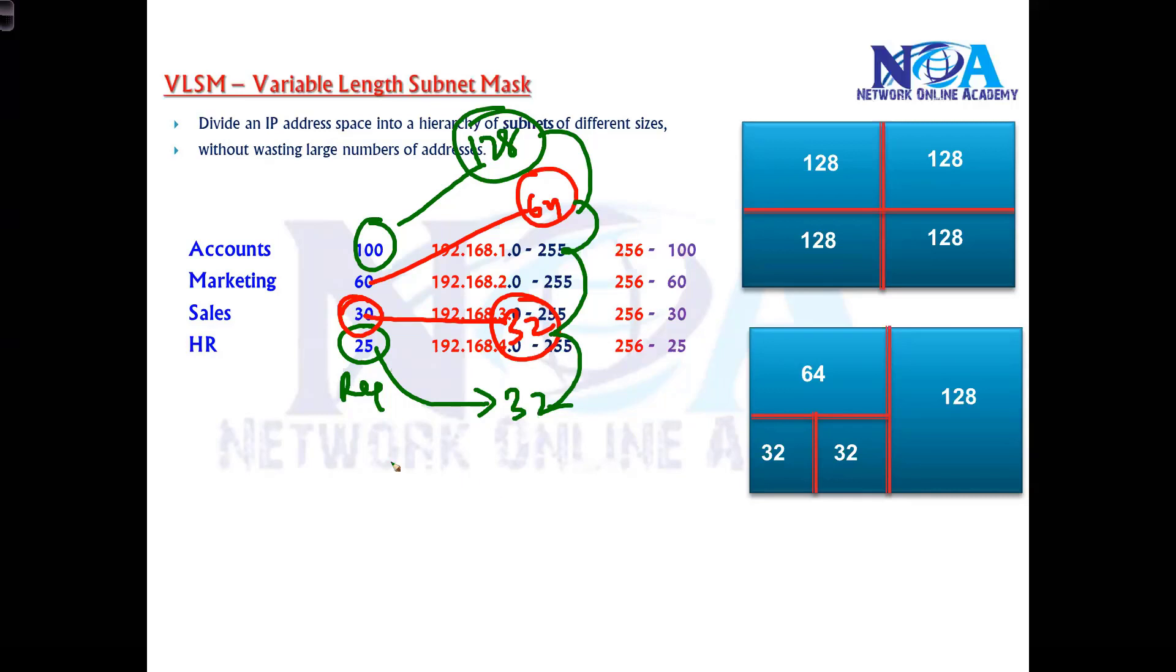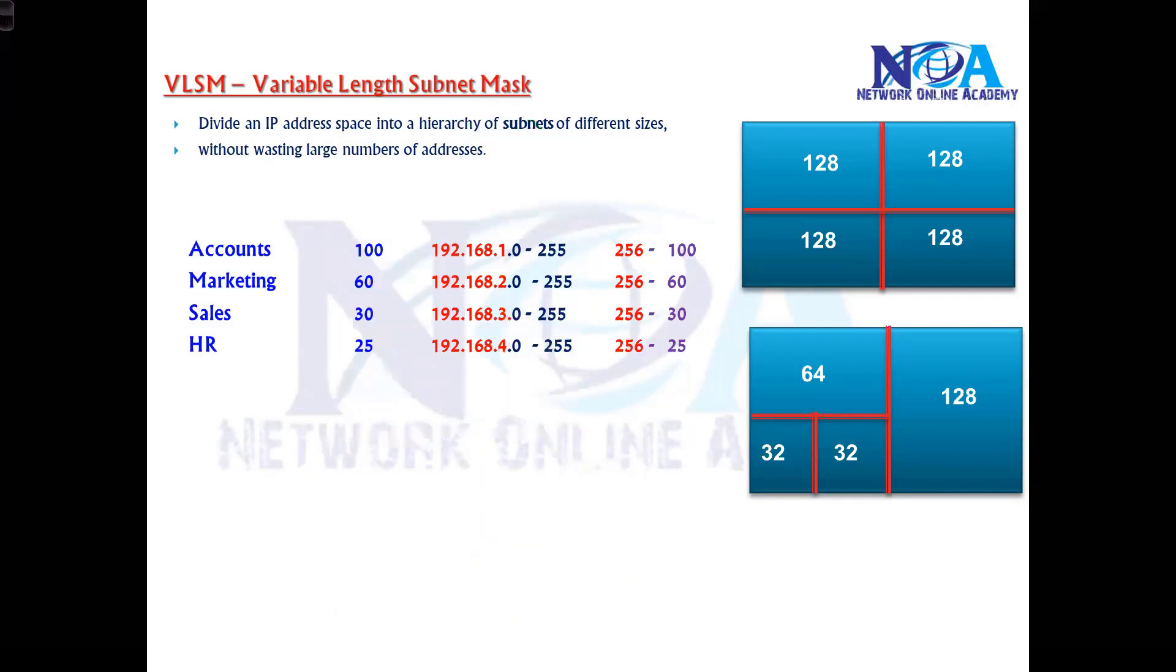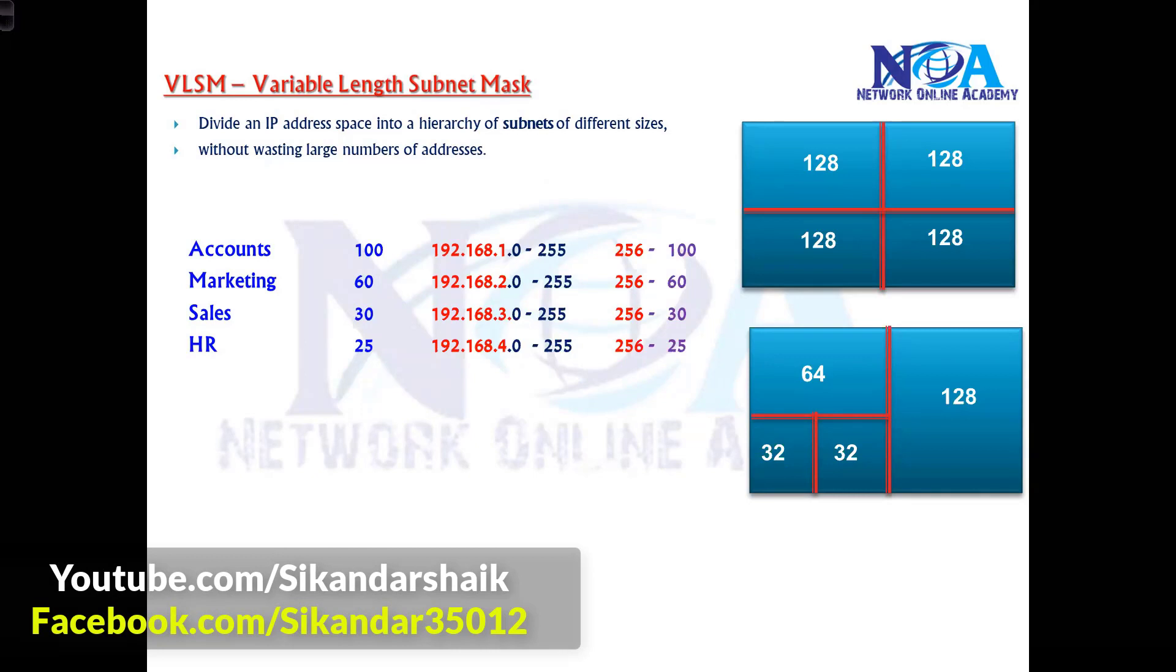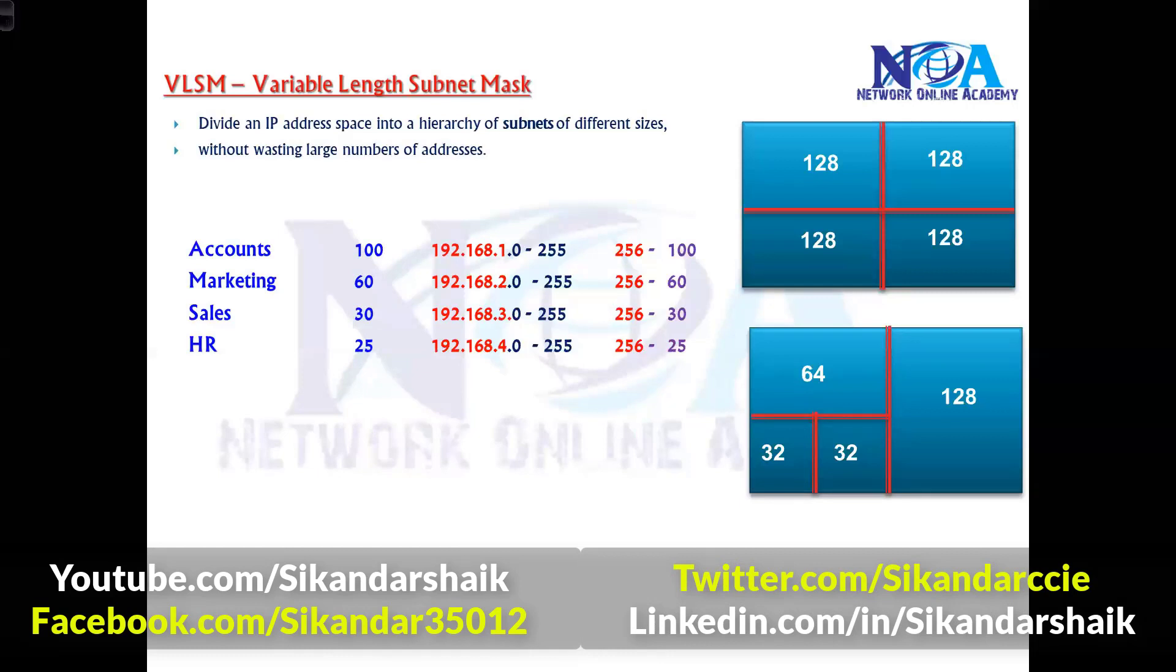Just like your kitchen, bathroom, hall, bedroom - if you take a normal design of any flat, generally it will be in variable sizes depending upon the requirement. The exact same thing we're doing in VLSM. This will further minimize the wastage of IPs because the subnet we divide will be the nearest to that particular requirement.